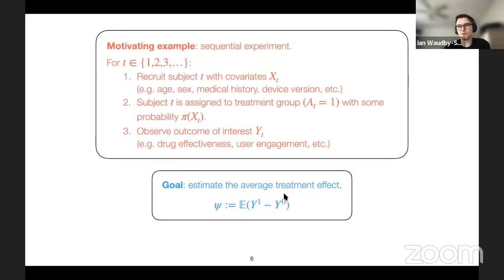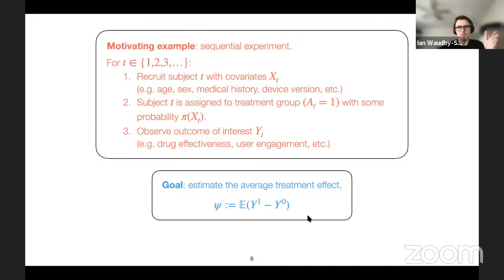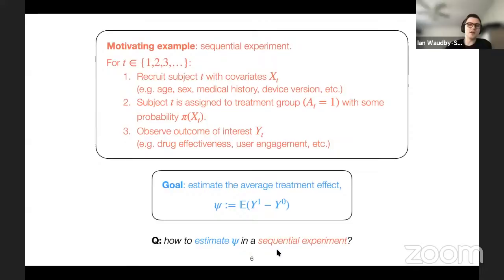The general goal is to estimate the average treatment effect. This is a counterfactual quantity: y superscript 1 and y superscript 0 represent the average population outcome if everyone were assigned to treatment versus control. It's counterfactual in the sense that we don't observe everyone's outcome under both treatment and control — only one or the other. We need some assumptions to actually estimate this quantity from data.